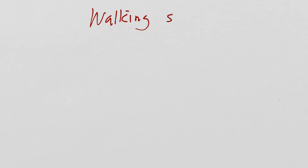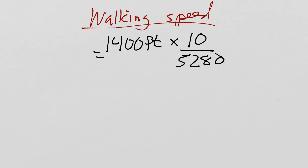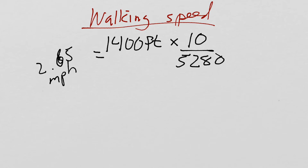What we will do is calculate his walking speed during the test. Using a simple equation — also in the handout, and available via apps — you take 1,400 feet times 10 divided by 5,280. This equals an average gait speed of 2.65 miles per hour. That's an average over the test, since the patient may walk fast at the beginning and slow at the end, or vice versa.